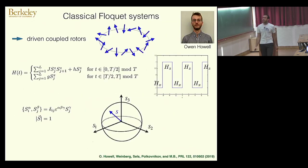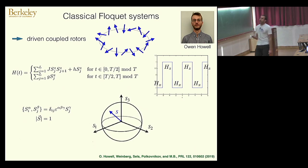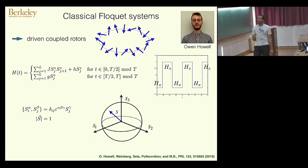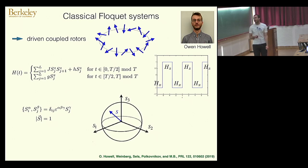Here is the relation to Francois: I want to study a classical version of the same problem. This was work done mostly by Owen Howell. I'm going to take the exact same Hamiltonian, except instead of quantum spin-one-half degrees of freedom, I have classical rotors. The classical rotors have a fixed length — they are placed on the unit sphere — and they satisfy the Poisson bracket rather than the commutator.